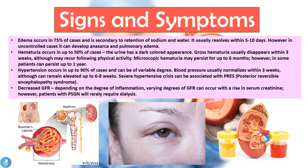Hematuria occurs in up to 50% of cases. The urine has a dark-colored appearance, meaning blood is found in the urine. Gross hematuria — visible to the naked eye — usually disappears within three weeks, although it may recur following physical activity. Microscopic hematuria may persist up to six months, and in some patients up to a year.